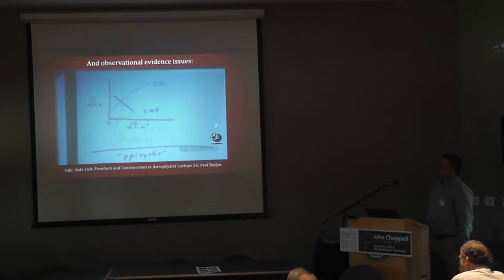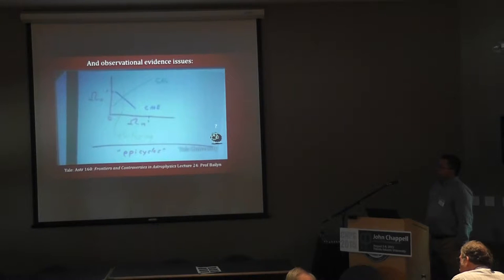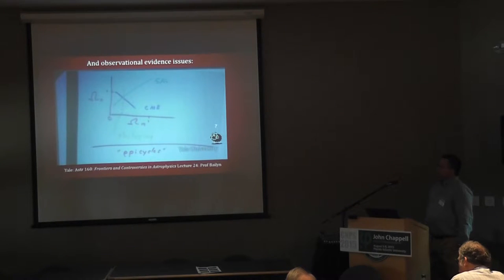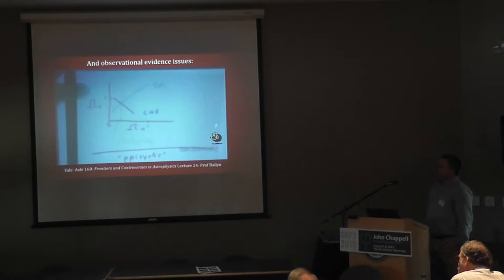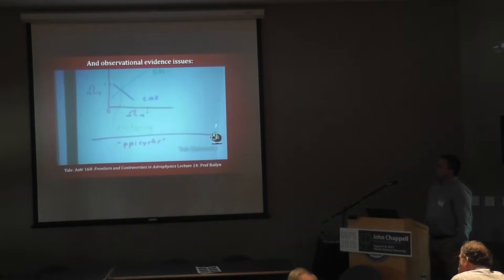How many more? Let's go out and measure some more things — maybe we'll need dark something else, and dark something else after that. Maybe it needs to change with time, or magically appear halfway through the history of the universe. If you keep inventing these things, of course you can explain anything you like — just in exactly the same way that if you have enough epicycles, you can have a model with the Earth at the center of the universe that explains all the motions of the planets you see.